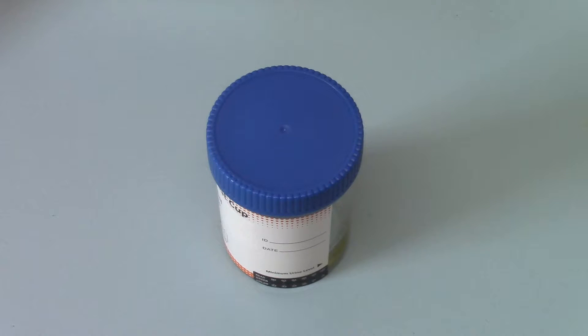This sample cup has been given to an individual to do a urine sample into. The procedure is simple to give them the cup out of the foil, ask them to go and put a urine sample in the cup to approximately a third of the way up the level of the cup.